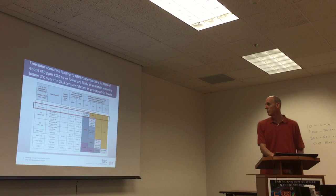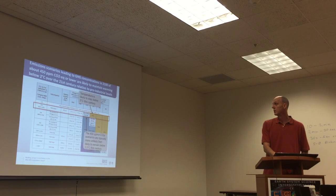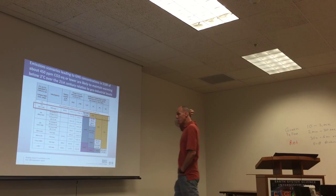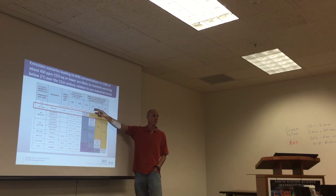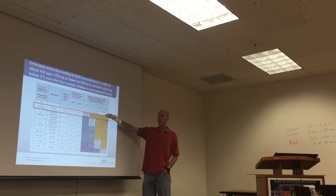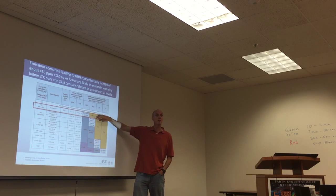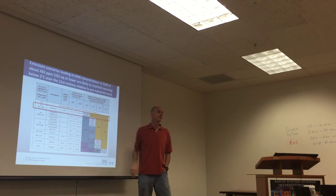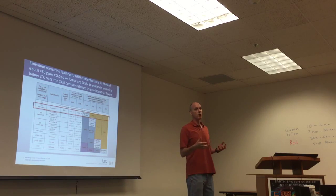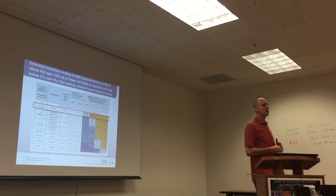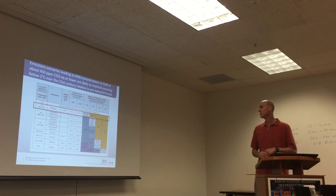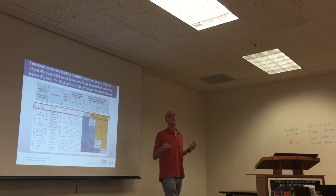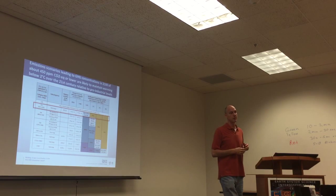Here's 1.5 degrees, 2 degrees, 3, and 4 — showing the likelihood to stay below that level this century. The only scenarios likely to stay below 2 degrees are the 450 scenarios. None of the others are likely to stay below 2 degrees. If you want to stay below 3 degrees, you can go all the way up to 650 by end of century and still have a good chance.